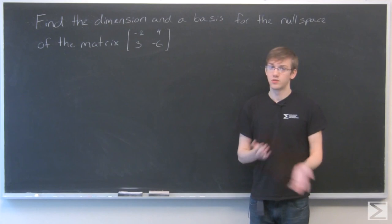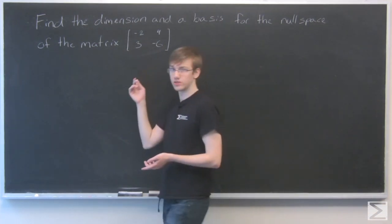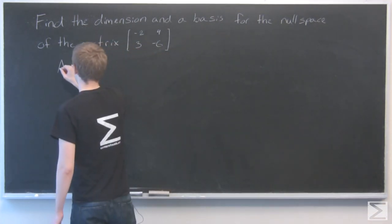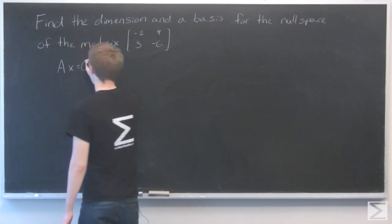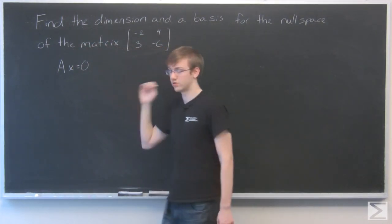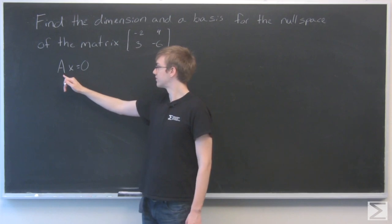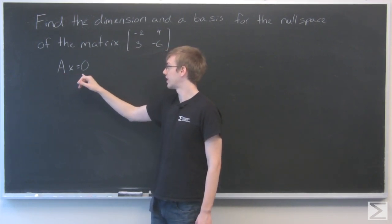To find the null space, what does that mean? If this is matrix A, the null space is the set of vectors that makes this equation true: the matrix A times the vector x equals 0.